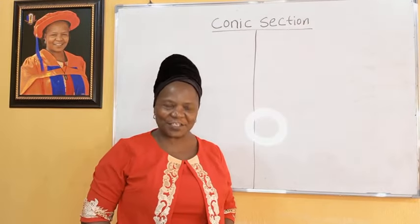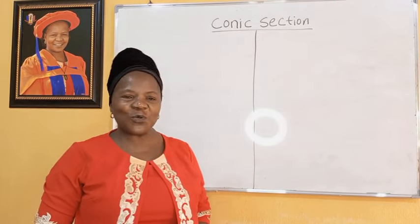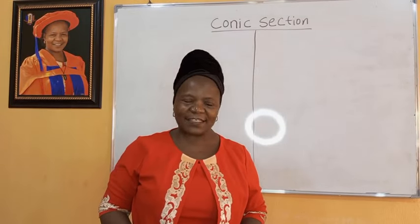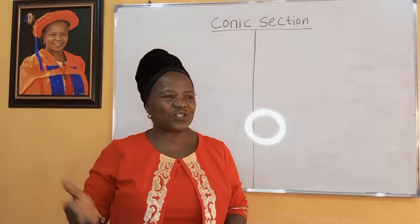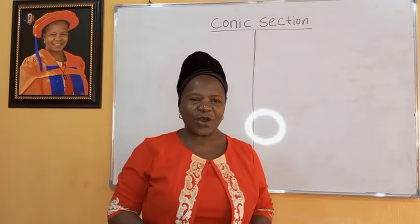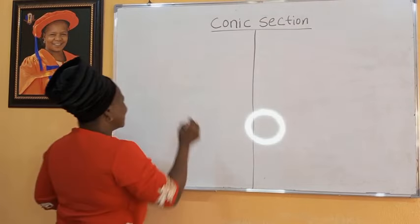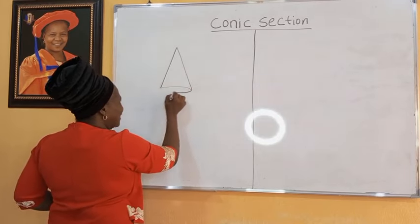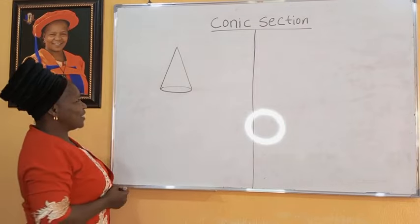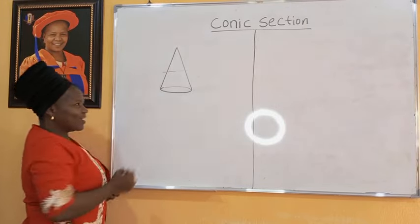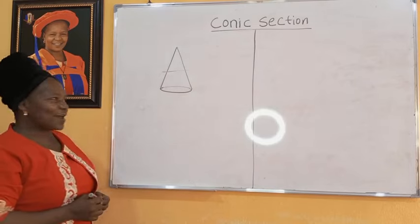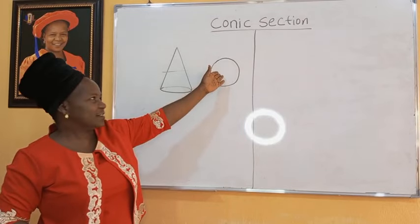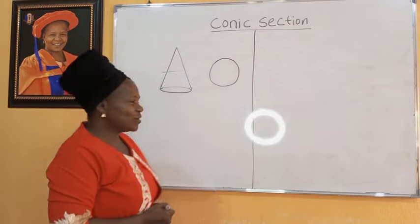What do we mean by conic sections? These are the types of curves we can get when we make a straight cut in a cone. If you have a cone and you make a cut this way, you are going to have a curve like this, which we call a circle.